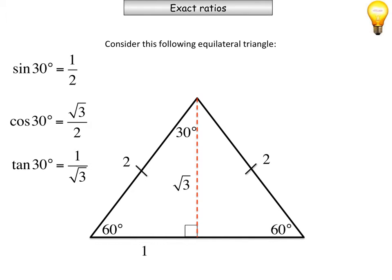And opposite over adjacent, opposite, adjacent is 1 over root 3. So this was looking at that angle up the top. That's to get the 30 degree angle ratios.